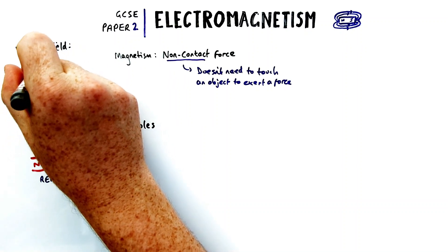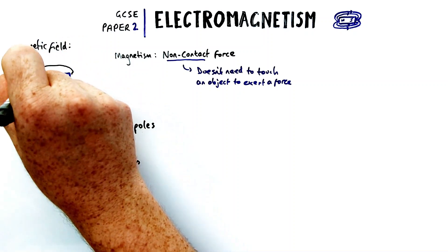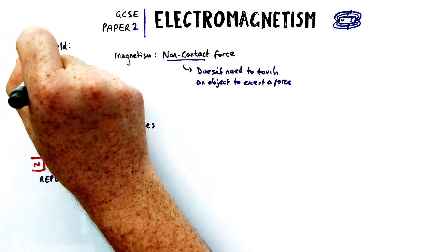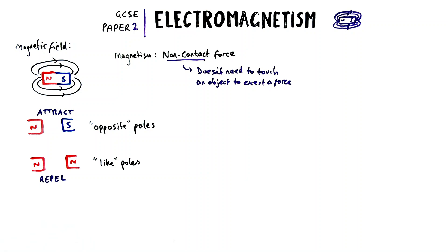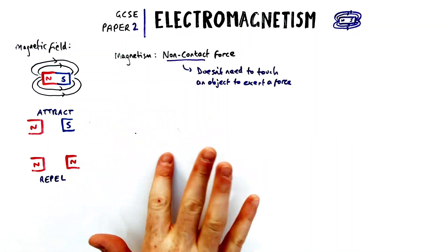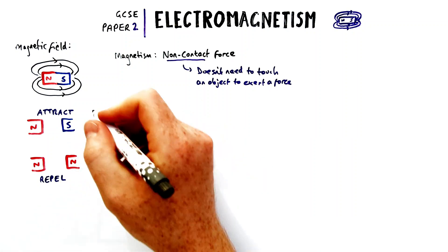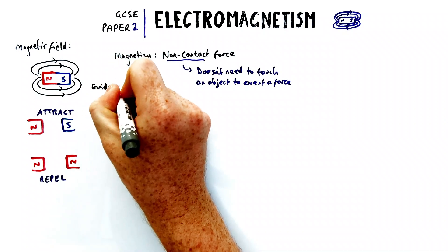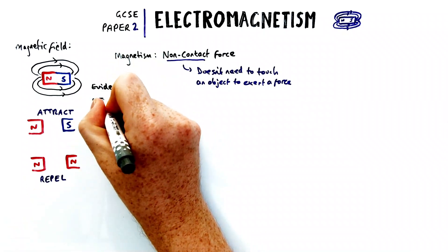The magnetic field around a bar magnet looks a bit like this. We have loops of magnetic field lines pointing from north to south. In an exam you'd only be required to draw a couple on each side, so please do not draw loads and loads.